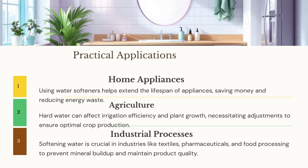There are several practical applications of soft water, including but not limited to: one, home appliances — using water softeners helps extend the lifespan of appliances, saving money and reducing energy waste. Two, agriculture — hard water can affect irrigation efficiency and plant growth, necessitating adjustments to ensure optimal crop production. Three, industrial processes — softening water is crucial in industries like textiles, pharmaceuticals, and food processing to prevent mineral buildup and maintain product quality.